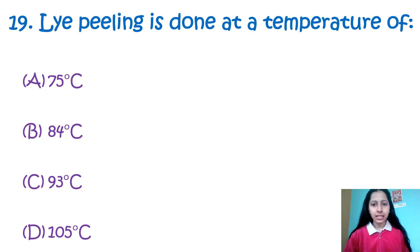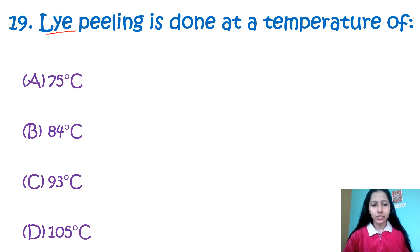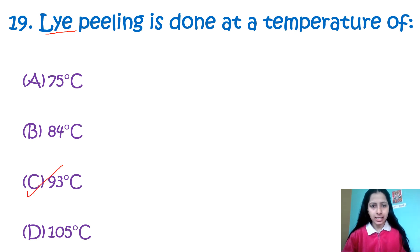Question 19: Lye peeling is done at a temperature of — 75°C, 84°C, 93°C, or 105°C. Lye peeling is a process for removing the peels of fruits and vegetables by immersing them in lye solutions — hot caustic soda solutions — followed by tumbling in a wash to remove the skins and chemicals. This is done at a temperature of 93°C — that is option number C.